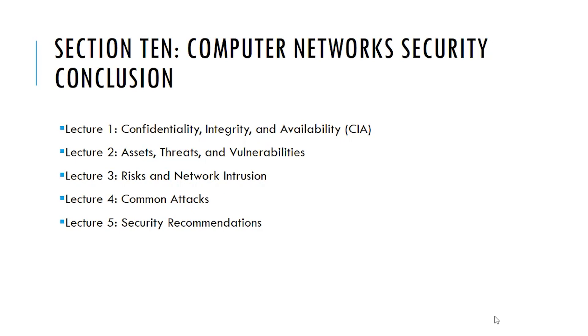Lecture 7 is a conclusion demonstrating the concept of CIA — confidentiality, integrity, and availability. Lecture 2 shows the meaning of assets, threats, and vulnerabilities.